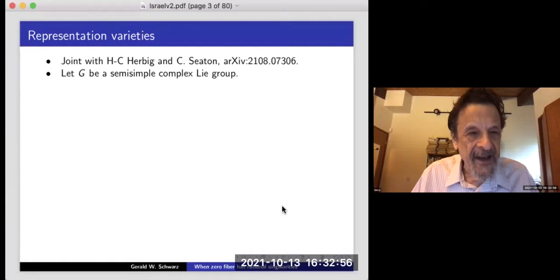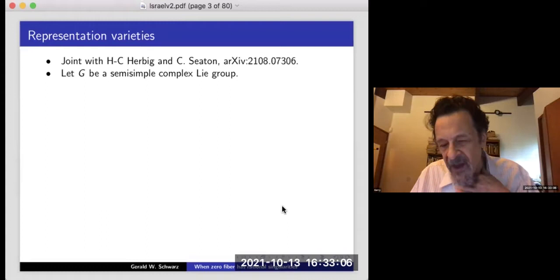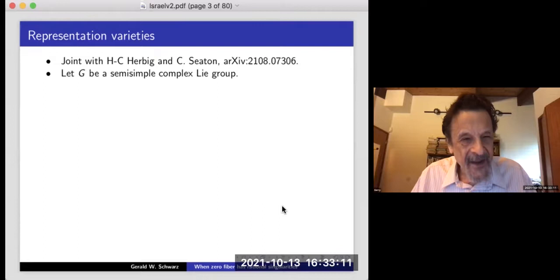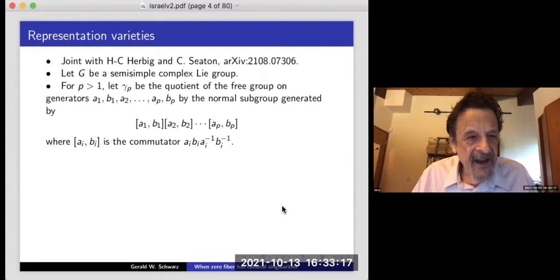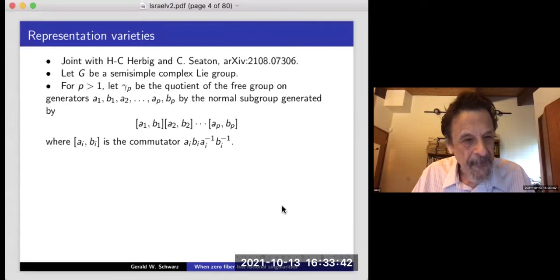I'm going to talk about their connection to the moment mappings. The basic object is a semi-simple complex Lie group G. I want to define the group gamma_P, which is the quotient of the free group on 2P generators A_1, B_1, through A_P, B_P, by the normal subgroup generated by the product of the commutators A_1 B_1 A_2 B_2 up through A_P B_P. This is better known as the fundamental group of a compact Riemann surface of genus P.